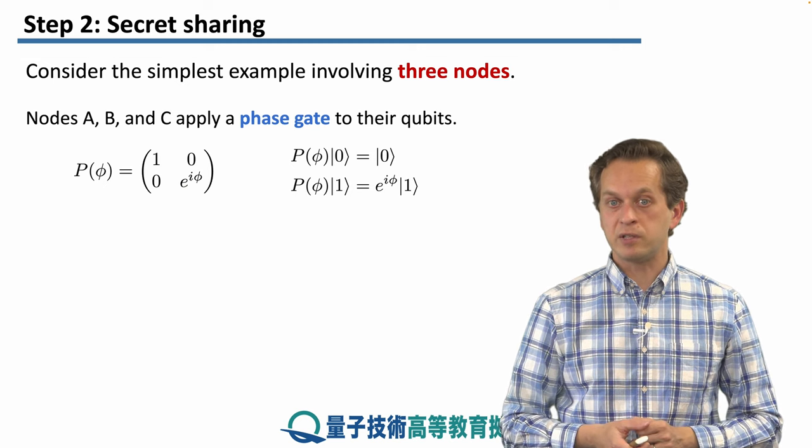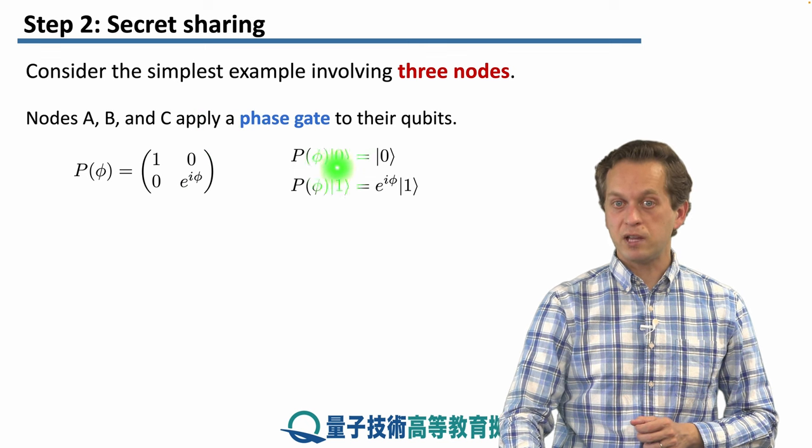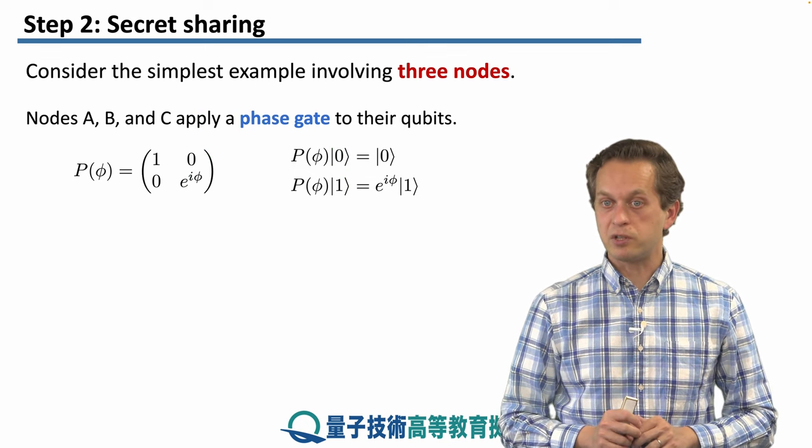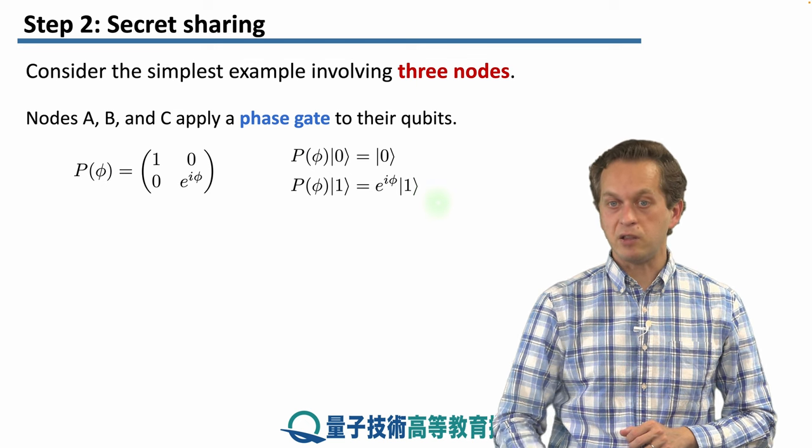This means that if we apply the phase gate to the |0⟩ state, nothing happens, we don't change the state. But if we apply it to the |1⟩ state, then we introduce a phase e^(iφ).